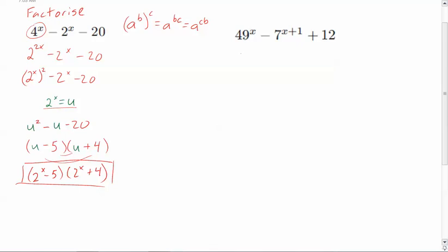49 is 7 squared, and so I hope that you're okay with me rewriting it in this format, 7x squared, just like we did over here. It would be 7 to the 2x, and then we're going to take the 2 and put it outside. Now we'll rewrite it as is, but there's something different here.